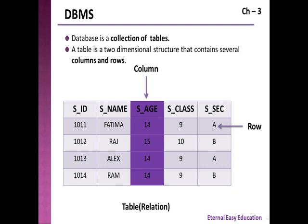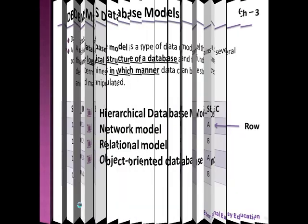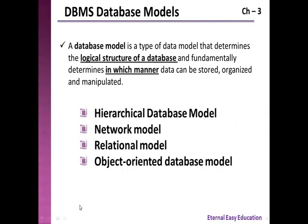Let's recall what is a database. A database is a collection of tables. A table is a two-dimensional structure that contains several columns and rows. The vertical things — student ID, student name, student age, student class, student section — are called columns, another name being attributes. The horizontal things are called records, rows, or tuples. All together is said to be a table.